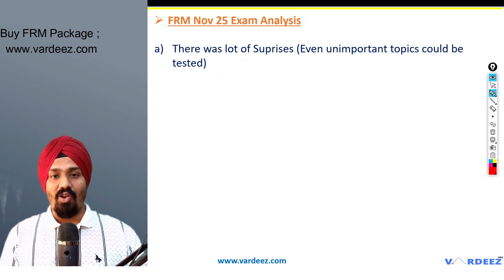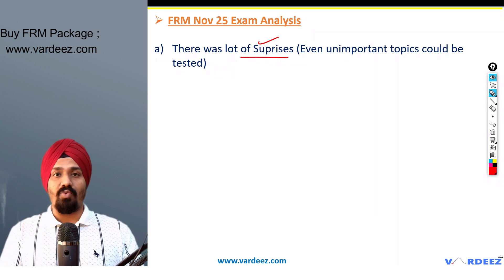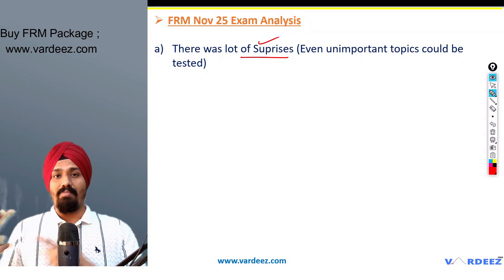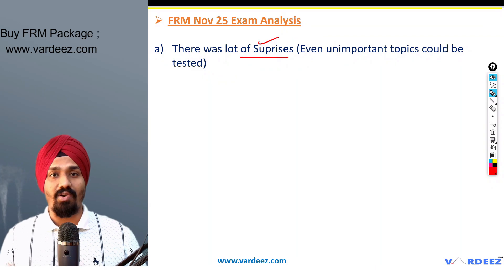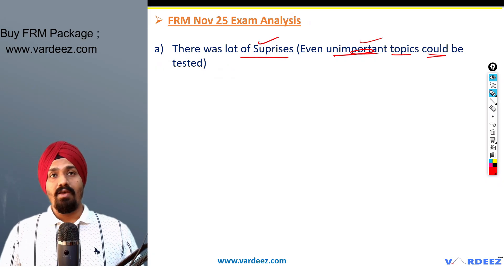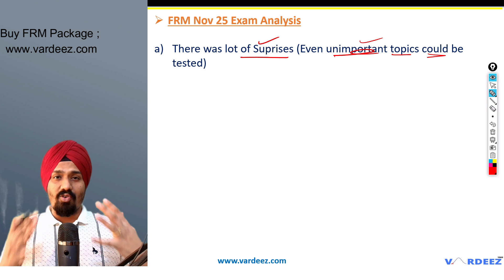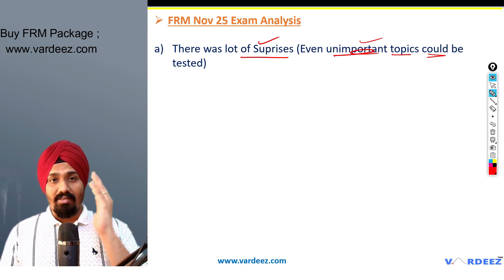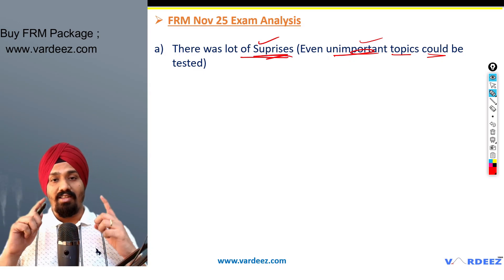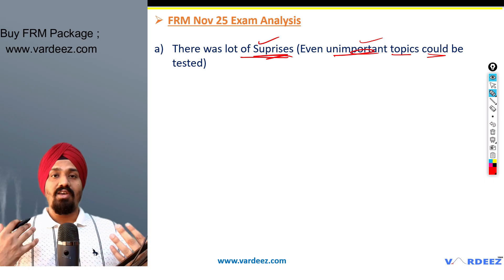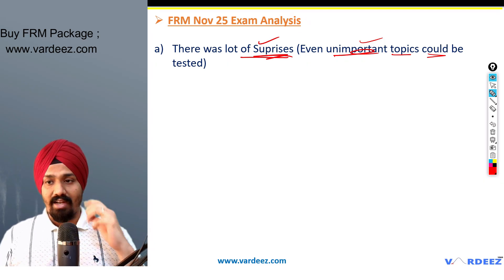Moving on to the actual November 2025 exam analysis — and I have to admit, there were a lot of surprises. It was not like May 2025 or August 2025. If someone was solely dependent on the most important topics and did not concentrate on anything else, they were caught off guard. Even topics considered unimportant could be tested. For example, EWMA or duration/convexity might not appear, while Greeks — which some felt were not testable — might show up. The key takeaway is to cover almost everything to minimize surprise on the actual exam.